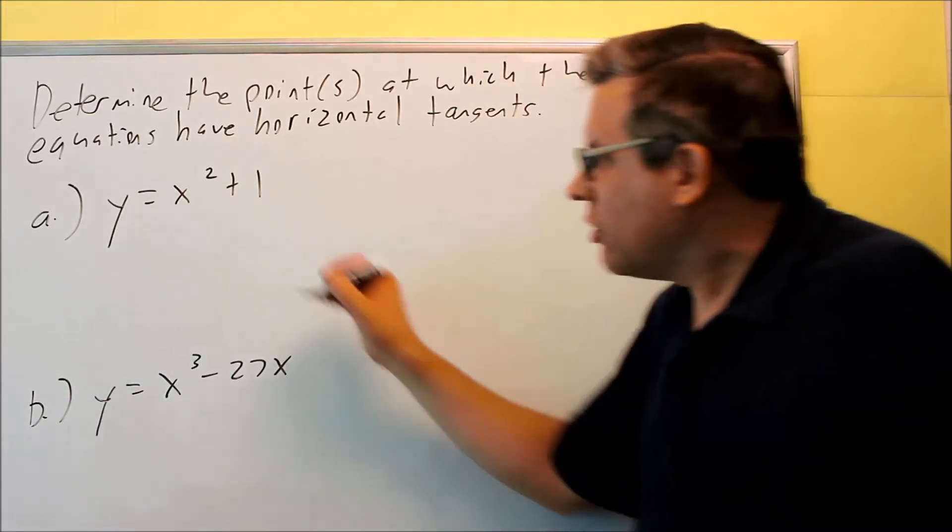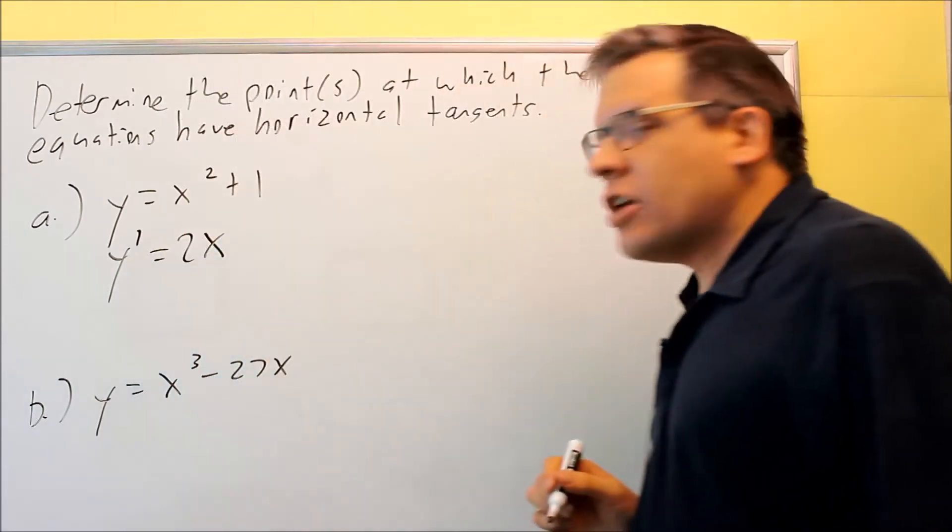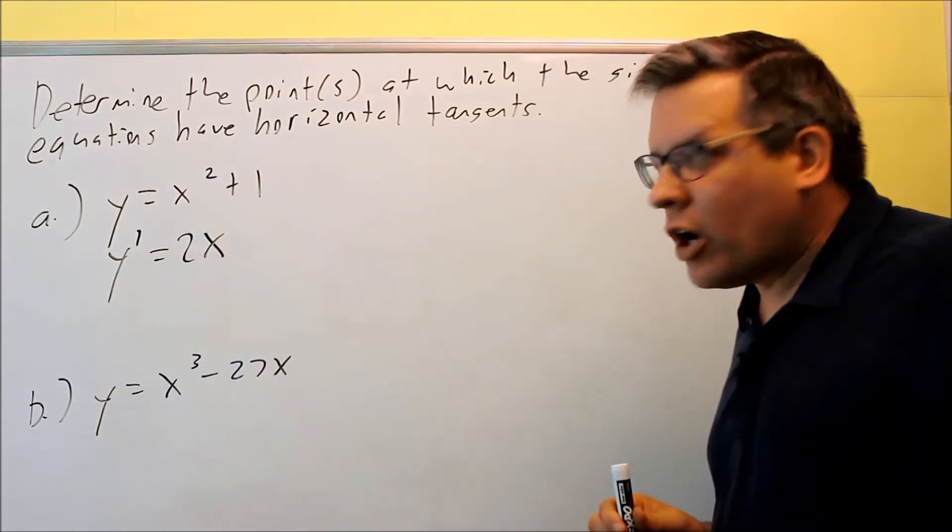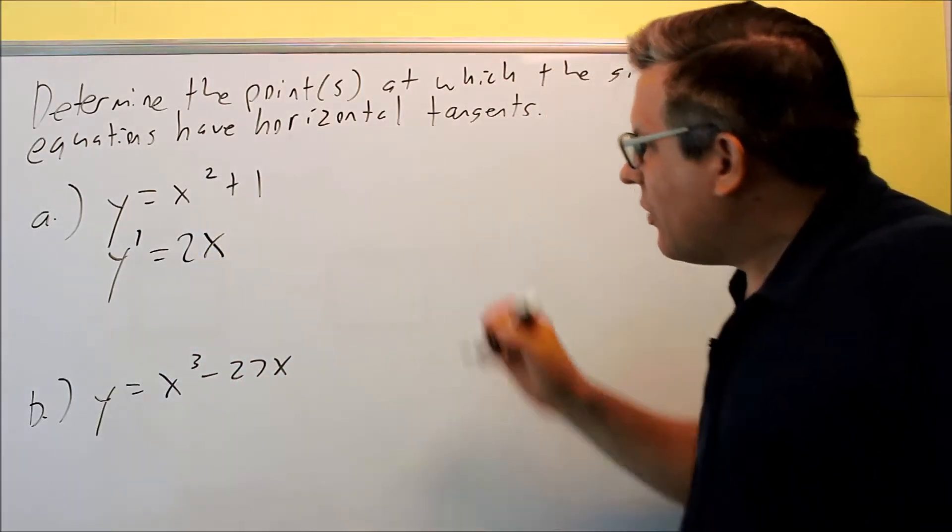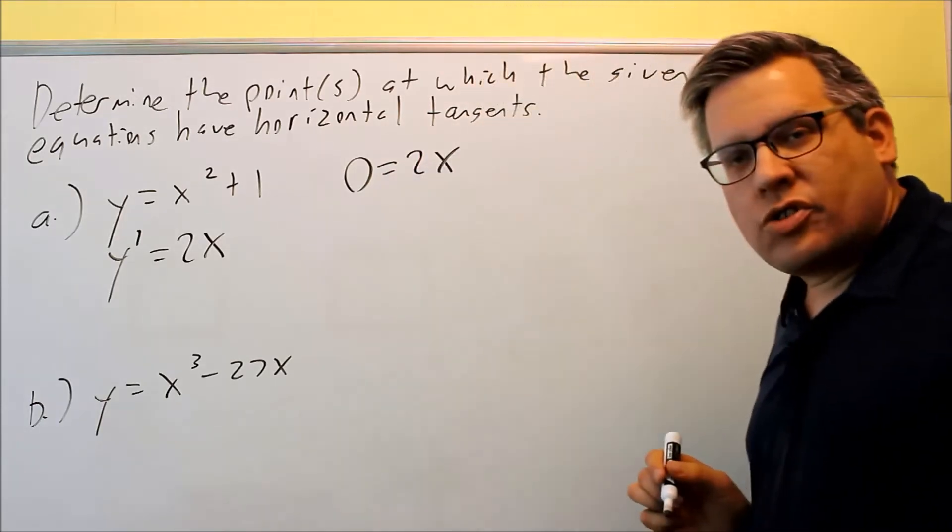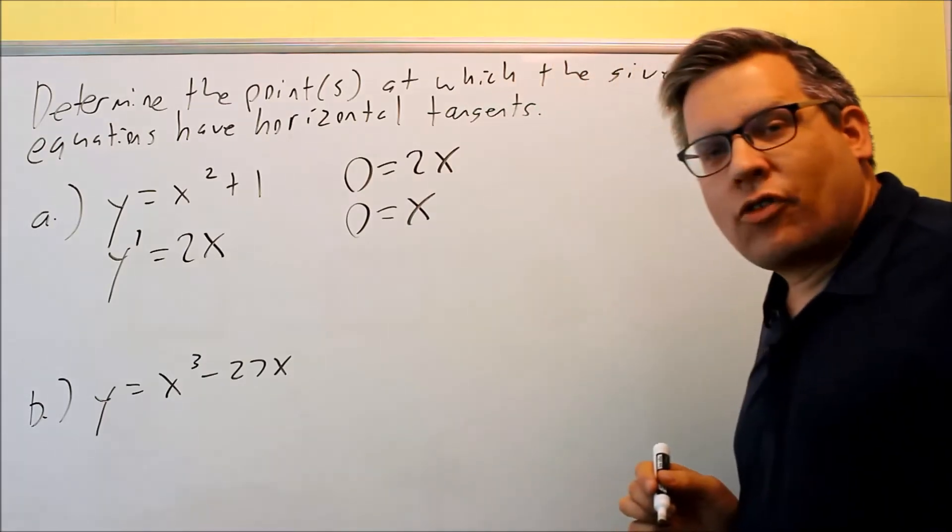Let's do that for the first one. Take the derivative, you get y prime. So you take the derivative, the 2 comes down, power rule, subtract 1 from the exponent, y prime is 2x. Then we're going to set the 2x equal to zero, divide both sides, and we get zero for x.